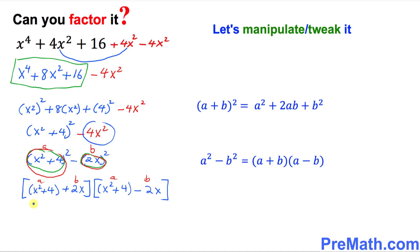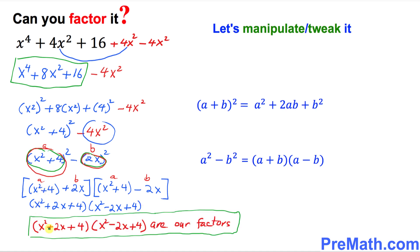Let's simplify a little bit. Opening up the parentheses, I can write (x² + 2x + 4) times (x² − 2x + 4). Thus x² + 2x + 4 times x² − 2x + 4 are the complete factors of this given polynomial.